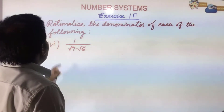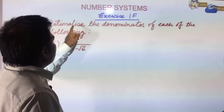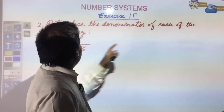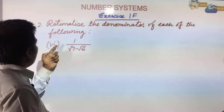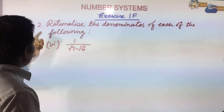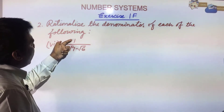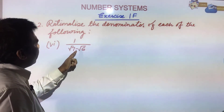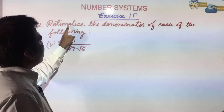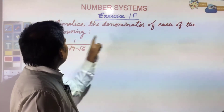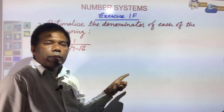Here you see question number 2: rationalize the denominator of each of the following. The sixth question in question 2 is 1 upon √7 minus √6. What we need to do is rationalize the denominator.